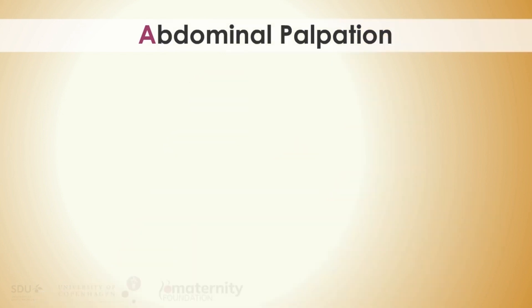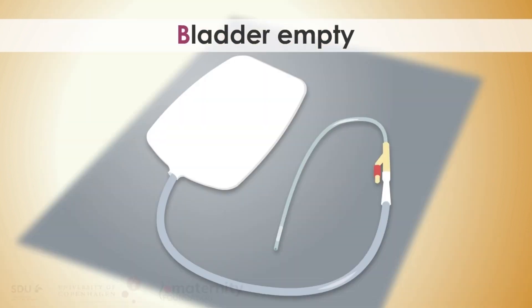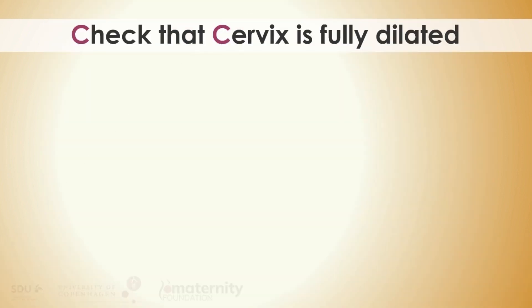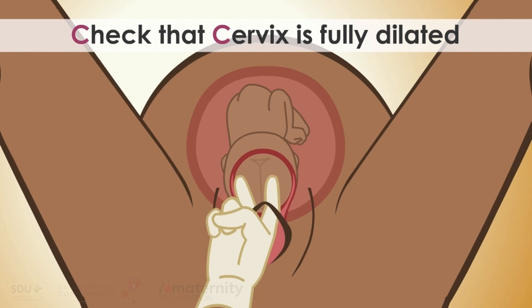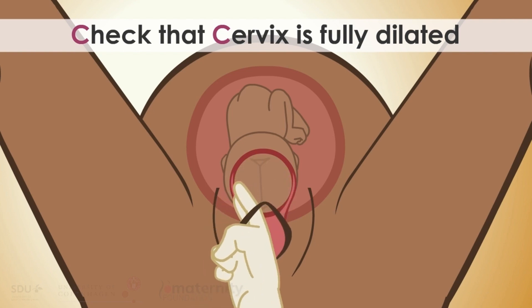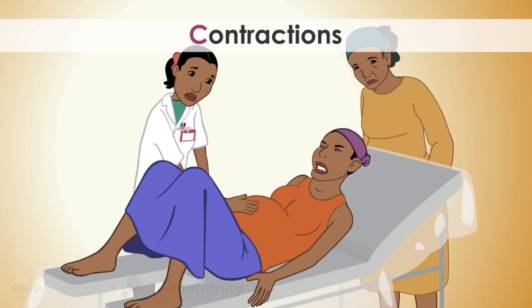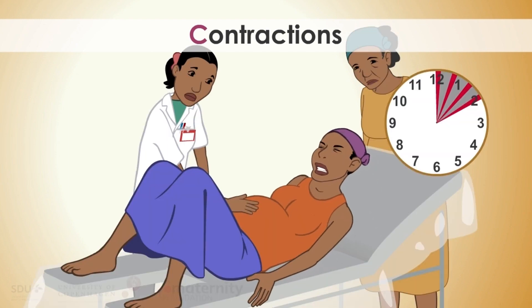Abdominal palpation: The head should not be palpable more than one-fifth over the pubic bone. Bladder empty. Check that the cervix is fully dilated. Contractions: There must be contractions to succeed.